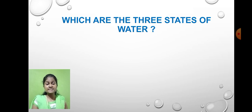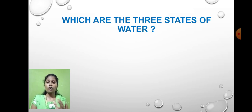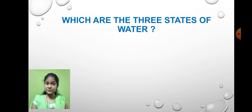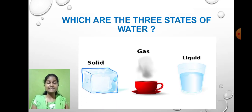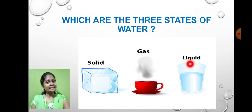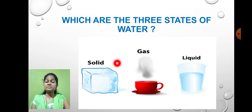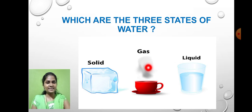Can you tell me which are the three states of water? There are three states of water that exist in nature, and you have already learned them. As you can see, the three states are solid, gas, and liquid. Water can remain in the solid state, in the liquid state, and also in the gaseous state.